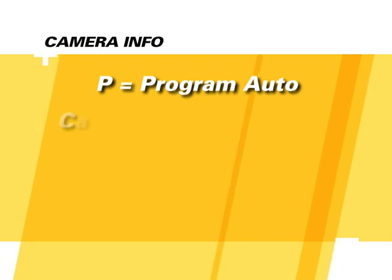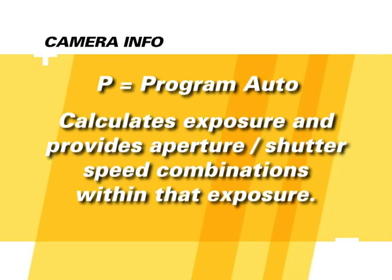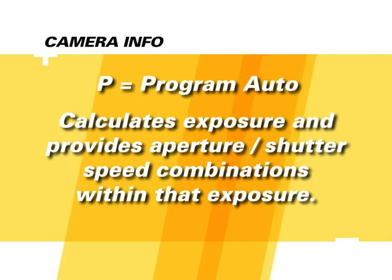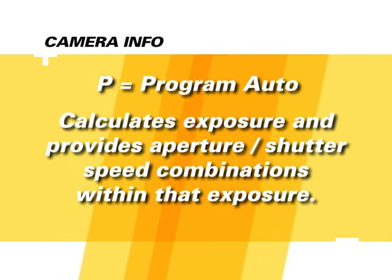The first mode, Programmed Auto Mode, is shown with a P on the mode dial. The P stands for Program. In this mode, the camera will automatically adjust shutter speed and aperture for optimal exposure in most situations. This mode is recommended for snapshots and other situations when you want the camera to automatically select the shutter speed and aperture.